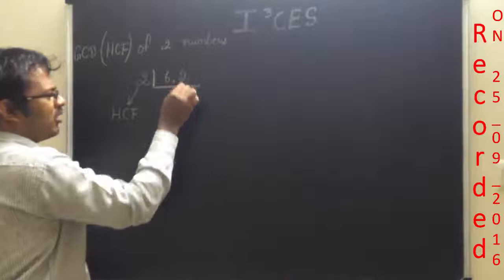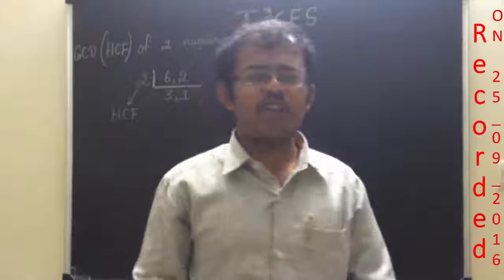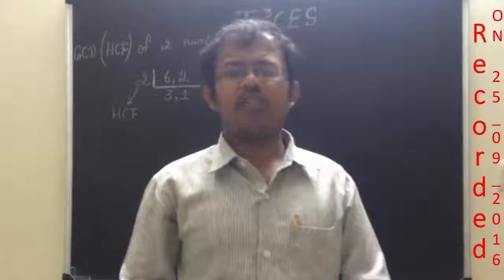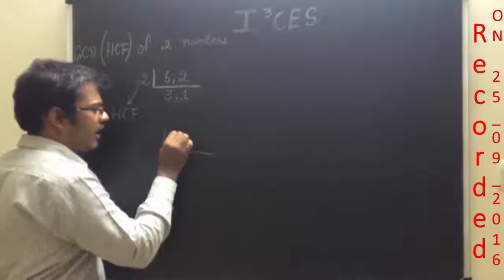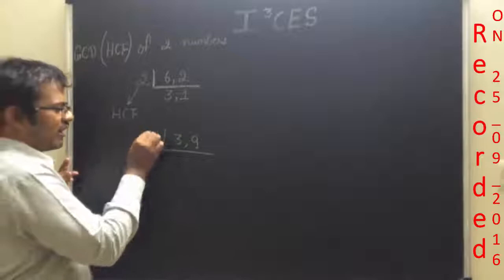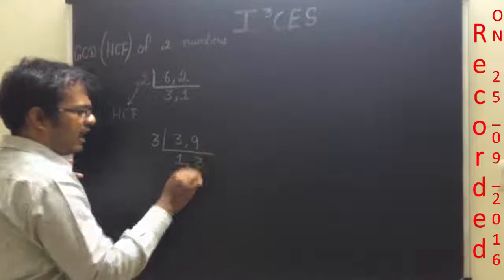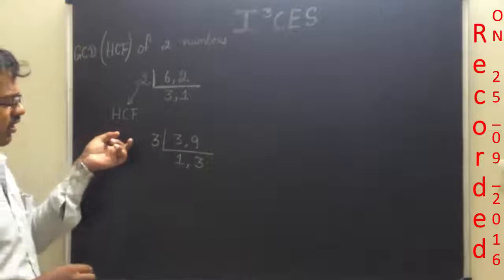In order to perform HCF or GCD of two numbers, you are going to make use of repetitive subtraction. And if you want to calculate LCM of two numbers, you will be performing repetitive addition. So this is one example, and the second example: let me consider 3 and 9. The common factors are 3 — 3 one times are 3, and 3 threes are 9. So you have to perform repetitive subtraction; that's the logic.